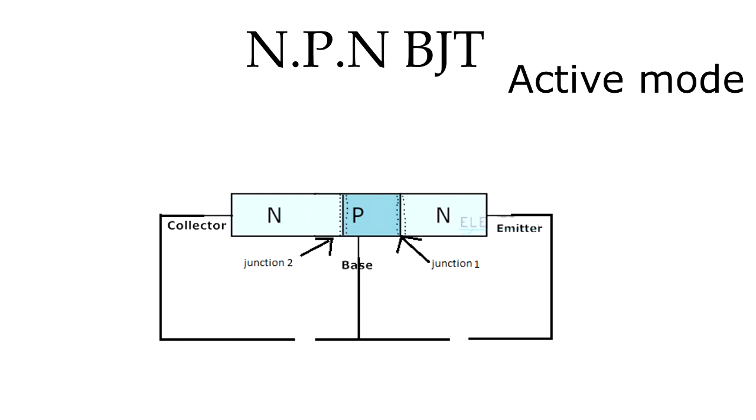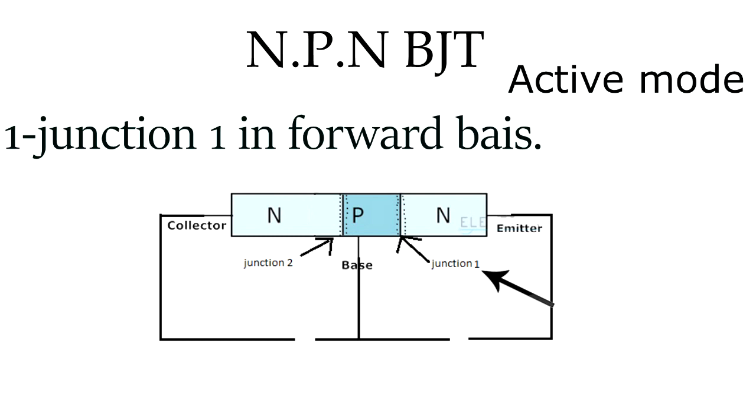If we want to make this operation happen, we need to make junction one in forward bias, and that happens when E is connected to the negative terminal and P is connected to the positive terminal. This forward potential is called VEB.